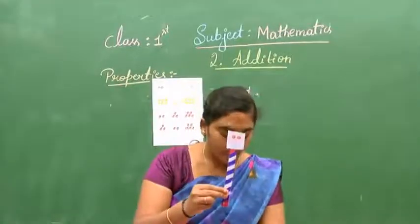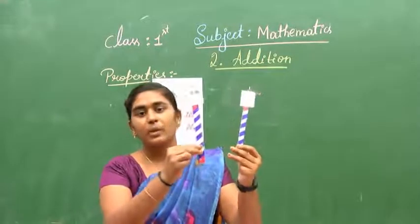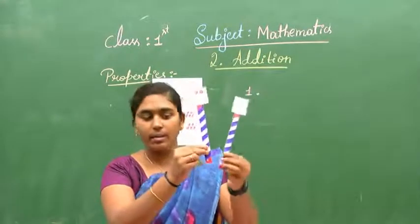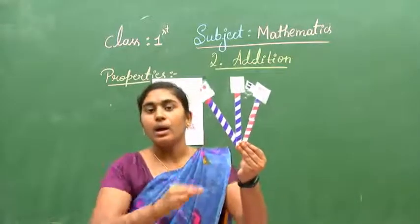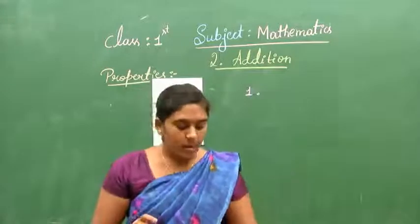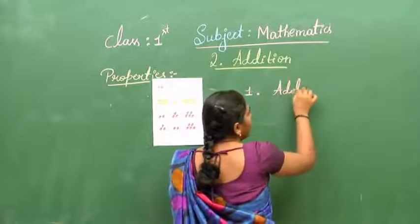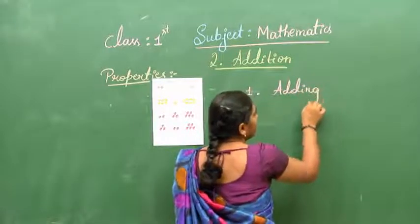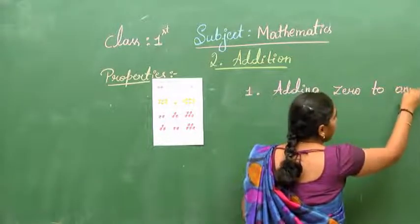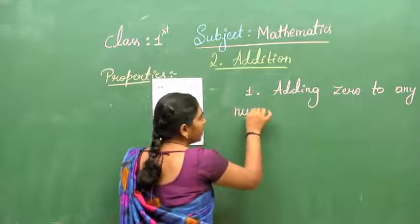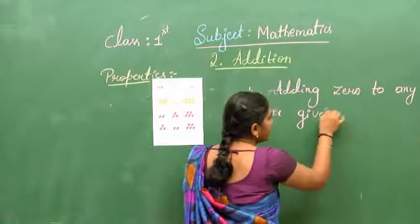For these two flowers, I am going to add zero. Zero means nothing. If you add zero to any number, you are going to get that number itself. Not only number 2, but any number. So what is the property? Adding zero to any number gives the same number.